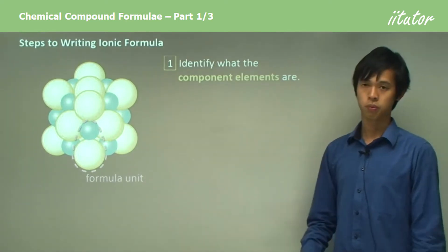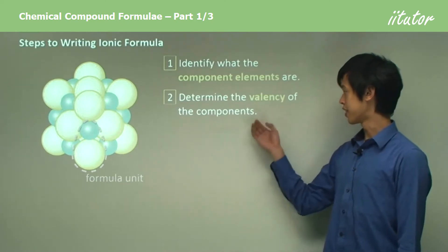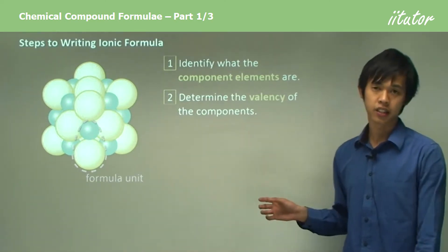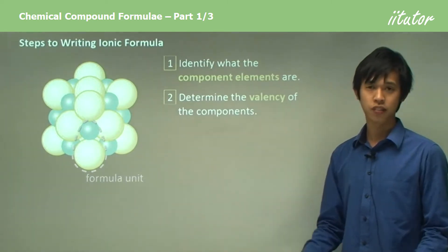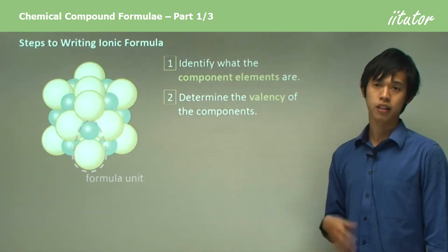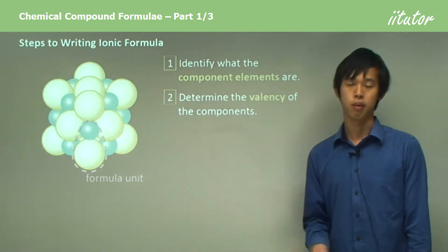Then you have to determine the valency of each component, and we know we can do this using the periodic table. Or if your memory is really good - maybe your teacher has given you a table of valencies and you just remembered them all - you can use the periodic table. But some of those polyatomic ions like carbonate or nitrate, you'll have to just remember off by heart.